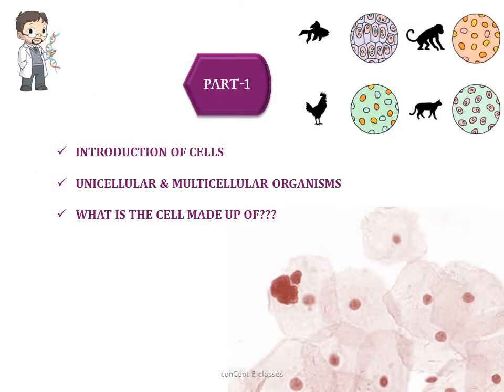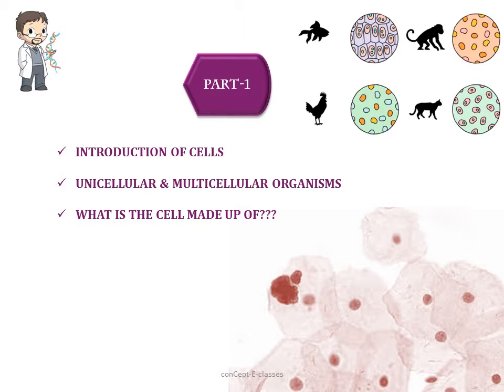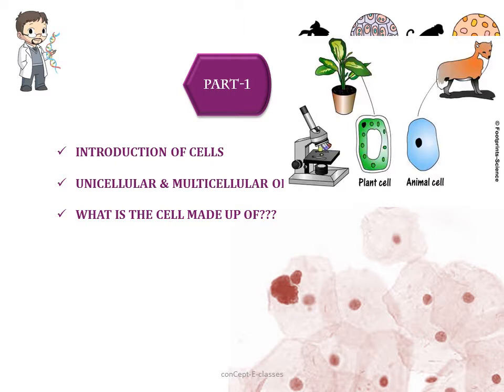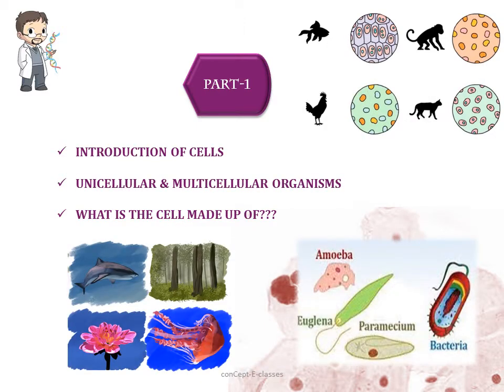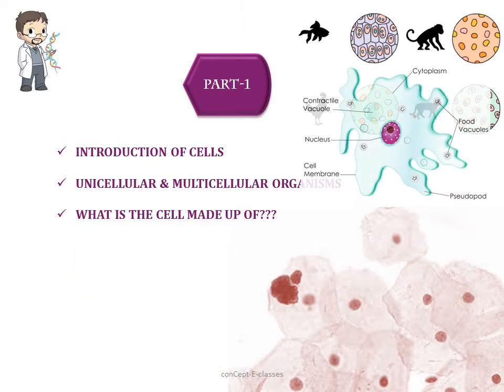Before we enter into Part 2, let's take a quick summary of what we studied in Part 1. First we saw about the introduction of cells — cells are the basic structural and functional unit of life, and all organisms are made up of cells. Cells were first discovered by Robert Hooke in 1665. Later, with the invention of many microscopes and magnifying lenses, it led to the discovery of the microscopic world. We also studied unicellular and multicellular organisms.